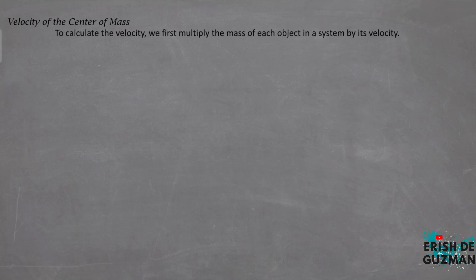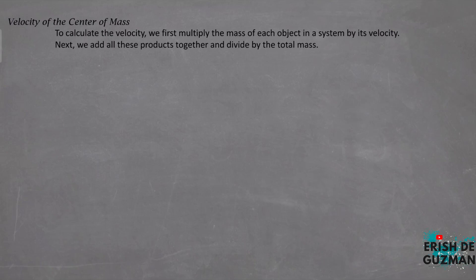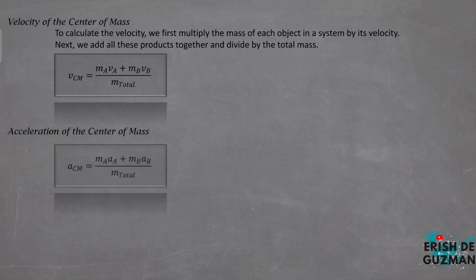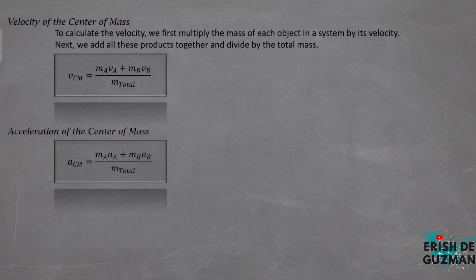Additional knowledge on the center of mass involves its motion. To analyze the motion of the center of mass, we consider both its velocity and acceleration. For the velocity of the center of mass, we multiply the mass of each object by its velocity, add all the products together, then divide by the total mass — the same approach used for position. Similarly, the acceleration of the center of mass uses the same formula with acceleration substituted for velocity.